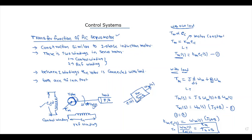The transfer function is the ratio of the Laplace transform of the output to the Laplace transform of the input. So the transfer function of the AC servo motor is KM/(Js + B). Please like and comment. Thank you.